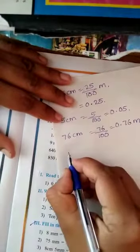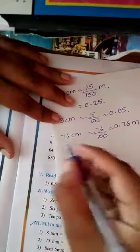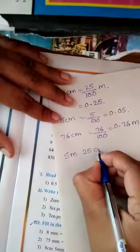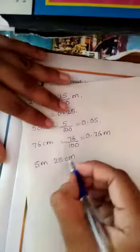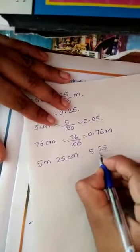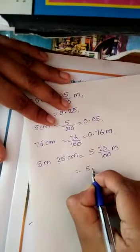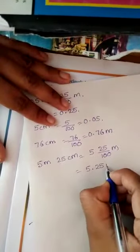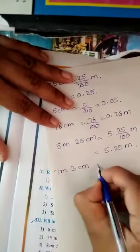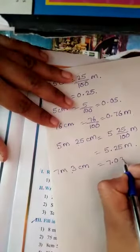Now suppose the length of a classroom is 5 m 25 cm. 25 cm is 25/100, which equals 5.25 m. Another example: 7 m 3 cm is denoted as 7 point, only one digit so we write 0, then 3 cm.